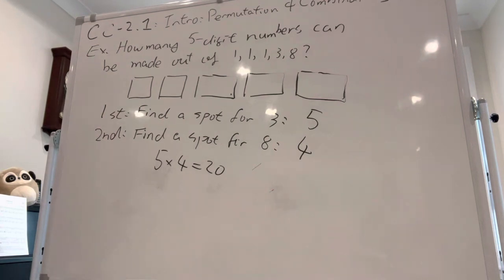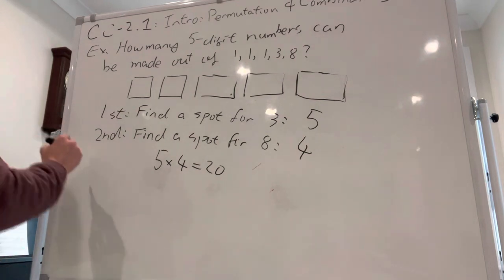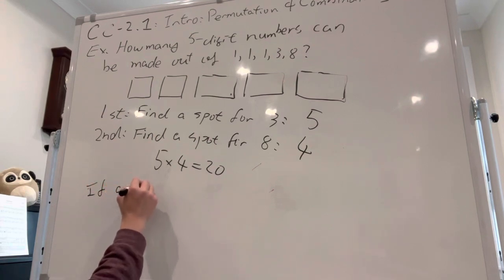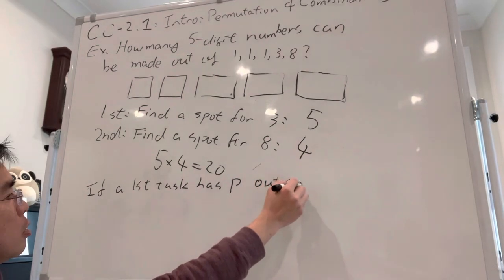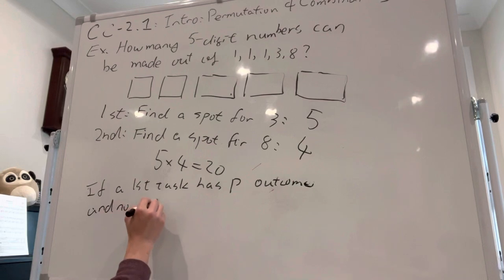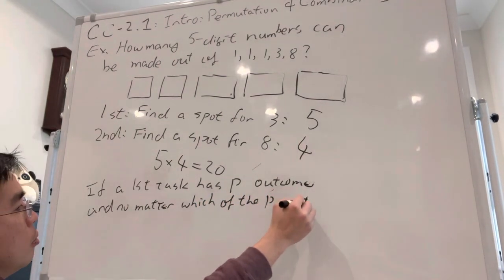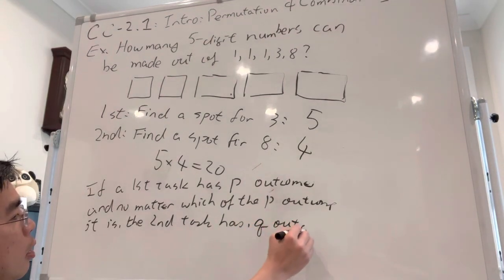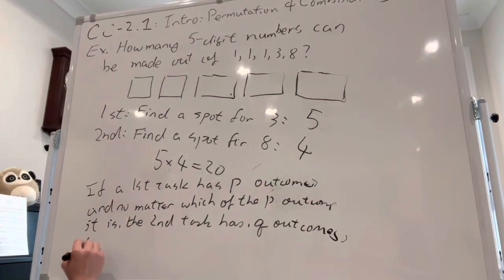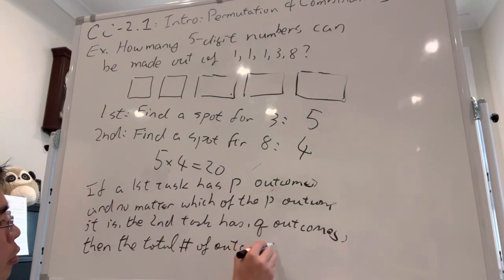Using what we taught in last class, this is what we call the multiplication principle. I'm going to repeat this: if a first task has P outcomes, and no matter which of the P outcome it is, the second task has Q outcomes, then the total number of outcomes is P times Q.